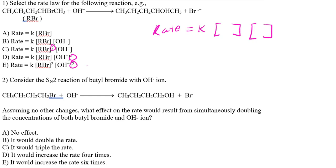Therefore, answer choices C, D, and E are incorrect because you're squaring something, which is not necessarily correct. So it's either A or B, and the answer choice would be B — but why?